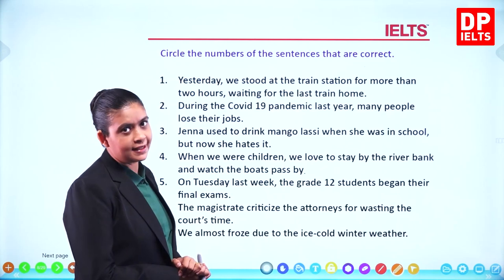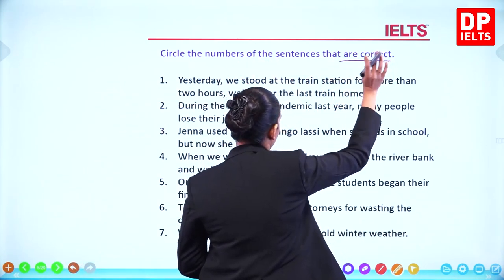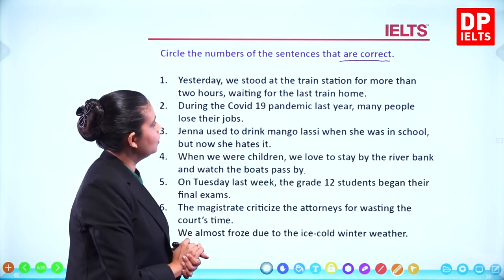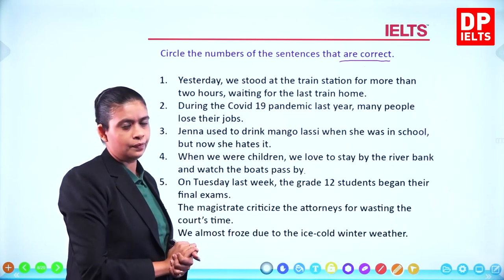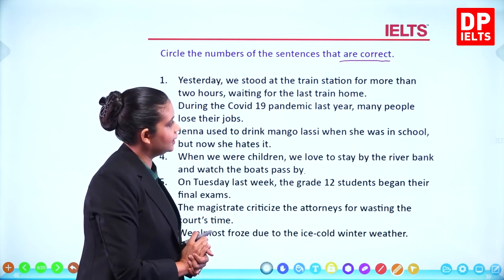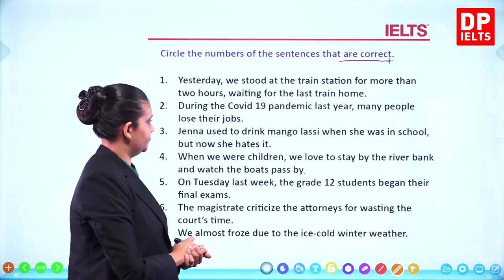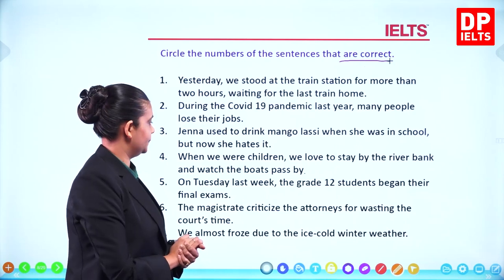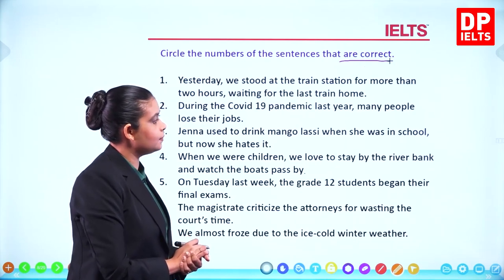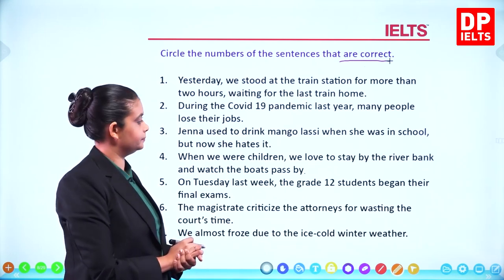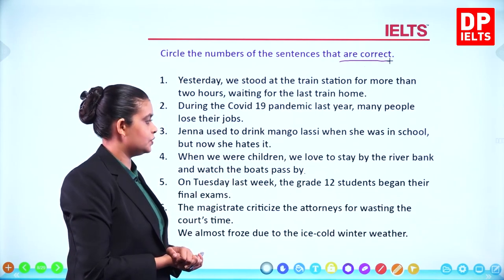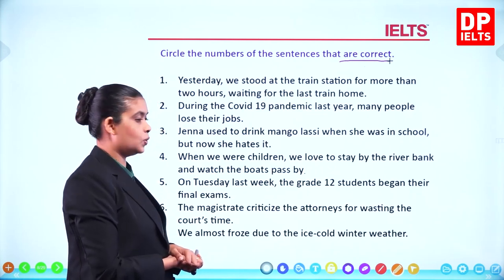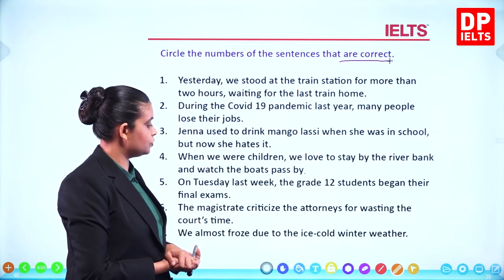Circle the numbers of the sentences that are correct. Sentences: 1) Yesterday we stood at the train station for more than two hours waiting for the last train home. 2) During the COVID-19 pandemic last year many people lose their jobs. 3) Jenna used to drink mango lassi when she was in school but now she hates it. 4) When we were children we loved to stay by the river bank and watch the boats pass by.